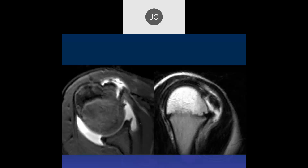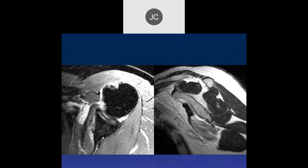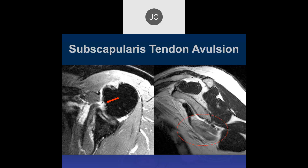Looking at the subscapularis, there's almost another avulsion — but this is a kid, so that's bone, and it's an avulsion. There's the CT. On axial and sagittal views, it looks like a complete tear of the subscapularis with retraction, with the musculotendinous junction retracted as well — going along with the complete tear. There's muscle atrophy of the subscapularis. So this is more probably a chronic complete tear.